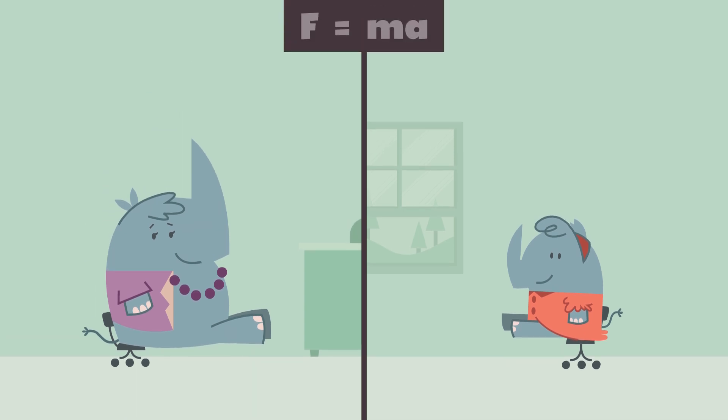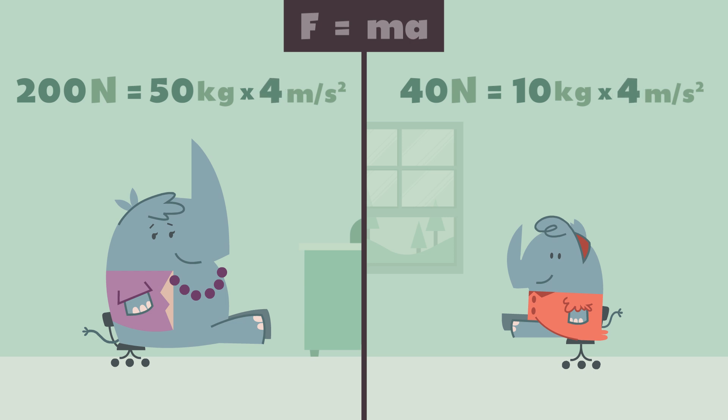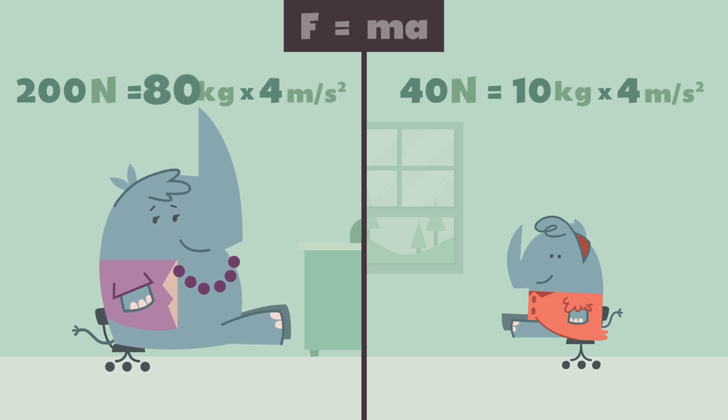All this has to do with Newton's second law of motion, F equals ma. It says for a set acceleration, an object with more mass requires more force to get it moving at that set acceleration. As mass increases, the force required to accelerate or decelerate that mass increases as well.